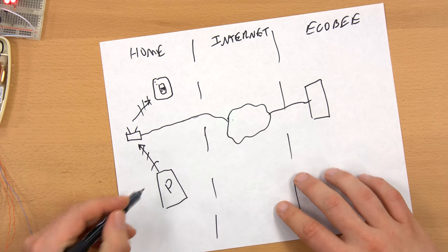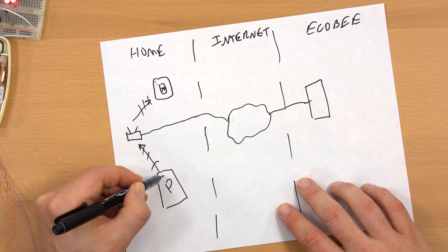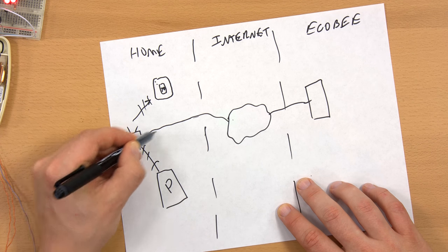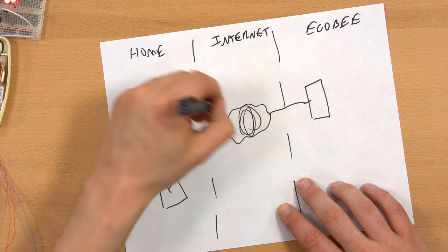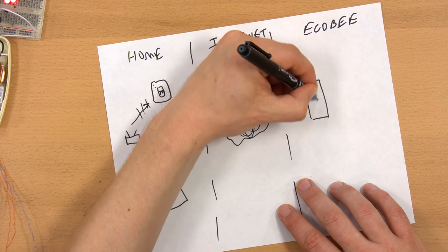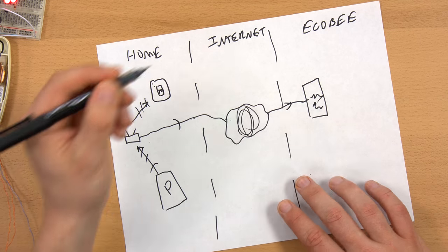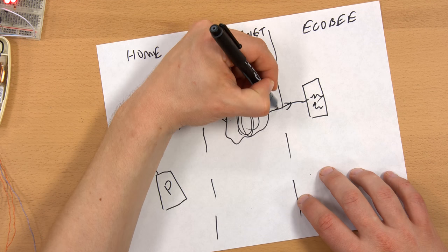Your command—let's say to change the temperature in your thermostat—goes from your phone through your internet connection, through the internet to Ecobee's server, which then processes that command and then sends a command back through the internet, through your access point router to the Ecobee.